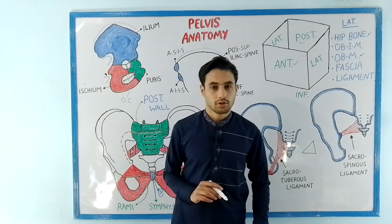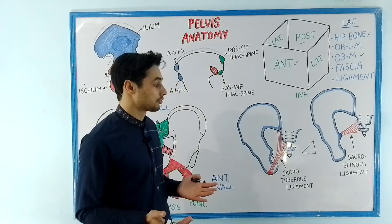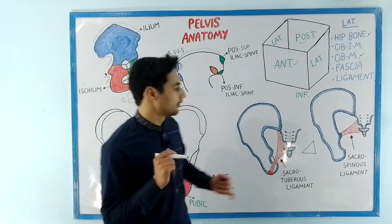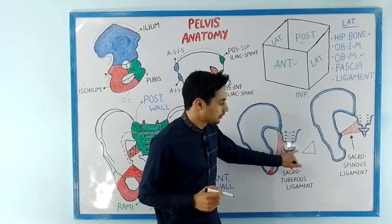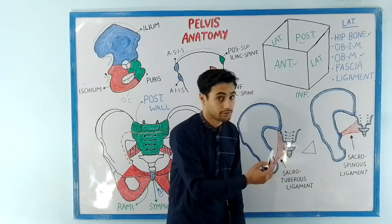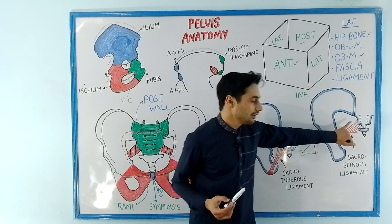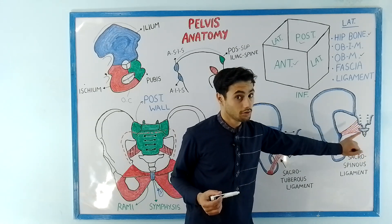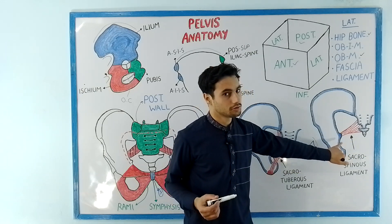The ischial tuberosity is the part of your bone where you sit, and also the origin site of important thigh muscles. The sacrospinous ligament looks like a triangle with an apex. The base is connected with the lateral surface of the sacrum and the coccyx bone, and the apex is connected with the ischial spine.